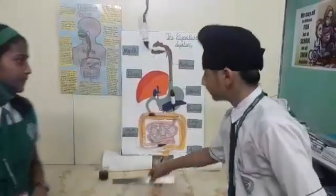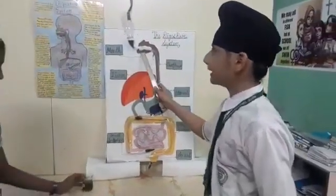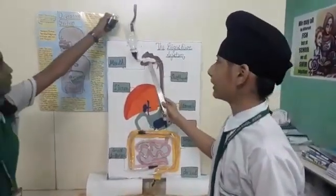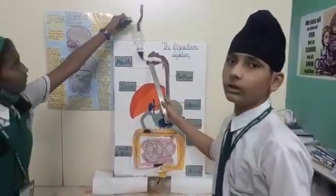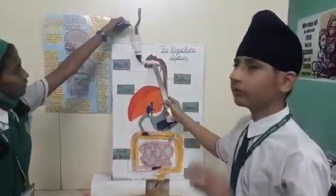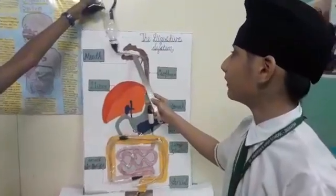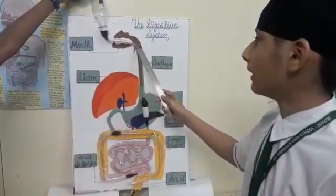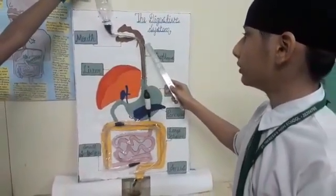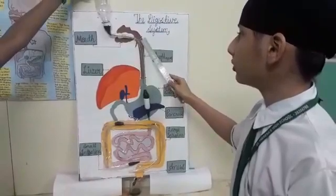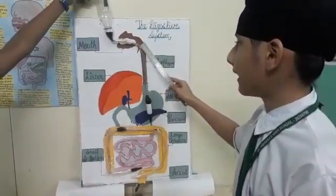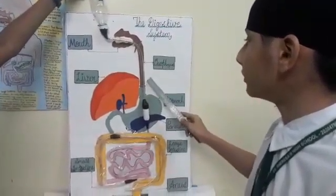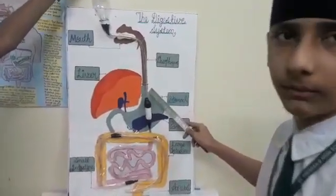Good morning. Let us get started with the mouth. As we all know, digestion gets started from the mouth. The food is chewed with the help of teeth and converted into small pieces. Esophagus is a tube connected from the pharynx to the stomach. The food is pulled through from the esophagus to the stomach.